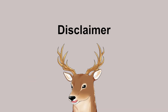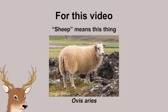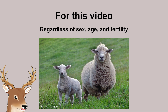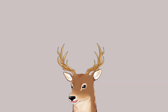Okay, time for a disclaimer. In this video, when I say sheep, I mean only the domestic animal, which is named Ovis aries, of all sexes and ages. The other wild species in the genus Ovis, I'll call them wild ovines. All right, moving on.